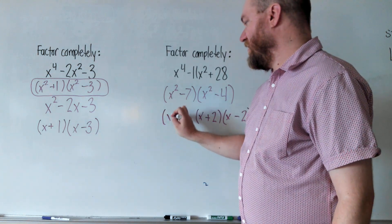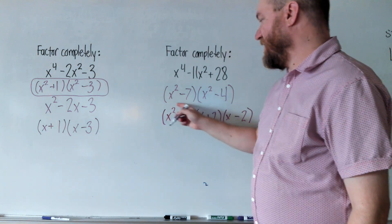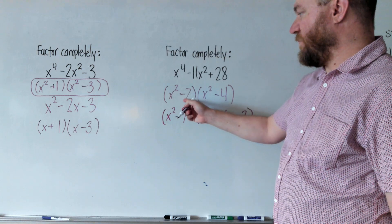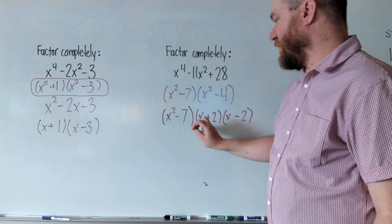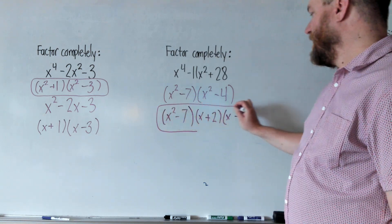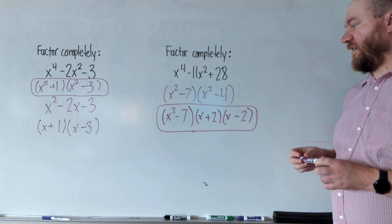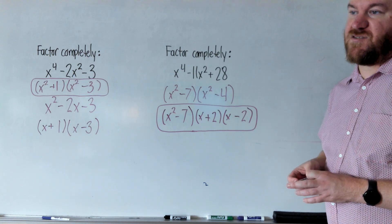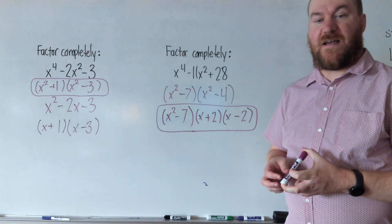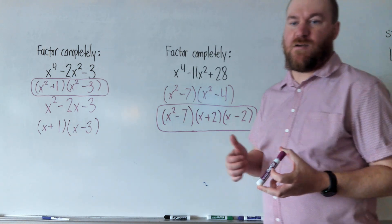Now, this one didn't change. They can't factor that. It's the same appearance, but that's not a perfect square. 7 is not a perfect square. So in that case, our answer to this question is x squared minus 7, x plus 2, x minus 2. And that's factoring quartic trinomials. Thank you for watching.